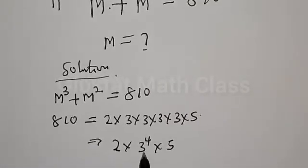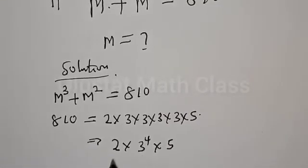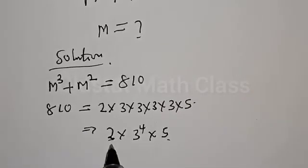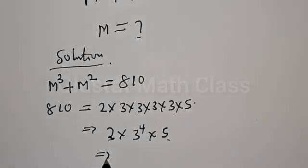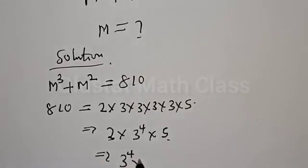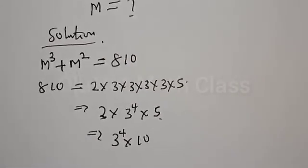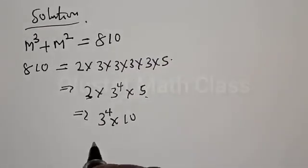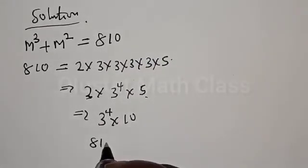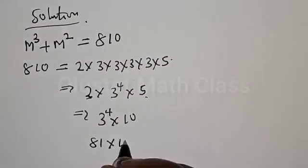Then we have 3 raised to the power of 4, and here is 2, here is 5. This implies that we have 3 raised to the power of 4 multiplied by 5 times 2, that is multiplied by 10. So 3 raised to the power of 4 is 81, multiplied by 10.